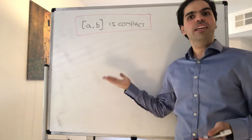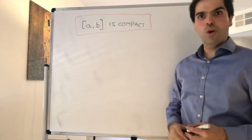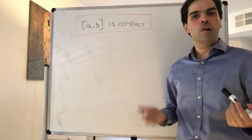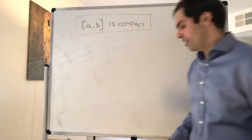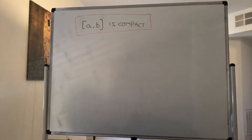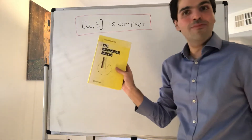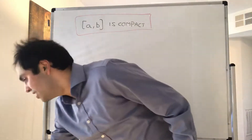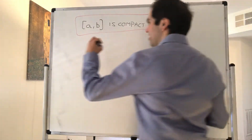Thanks for watching. Today I want to give you a direct proof that the closed interval [a, b] is compact without using the Heine-Borel theorem. I found this proof in the beautiful book Real Mathematical Analysis by Pugh, which you should check out — it's really awesome.